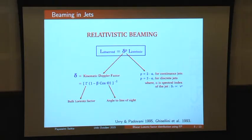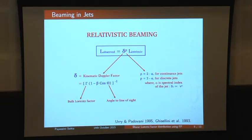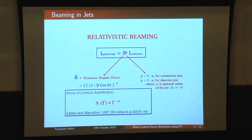To constrain the distribution, we need to understand relativistic beaming. The observed luminosity depends on the intrinsic luminosity of the source, the boosting index p — which depends on the jet type and spectral index — and the kinematic Doppler factor, which depends on the bulk Lorentz factor and the angle to the line of sight. For individual blazars it's very hard to calculate these, but we can statistically find a Lorentz factor distribution for the population — likely a power law, although not completely established — with gamma ranging roughly from 2 to 50.